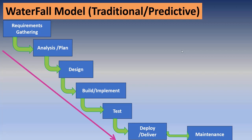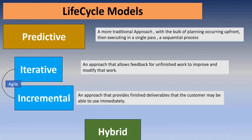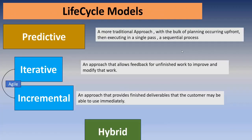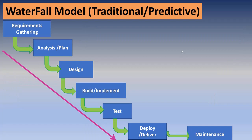In the previous video, we covered life cycle models: predictive, iterative, and incremental. This is a continuation of that. The Waterfall model is a predictive model — you can predict the requirements, scope, budget, and time before you start the project. The Waterfall model follows STLC phases one by one.